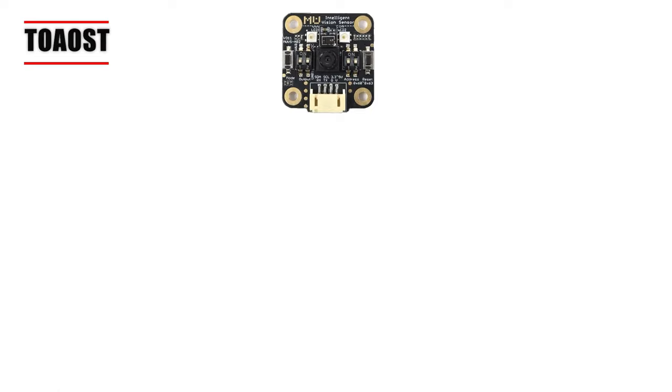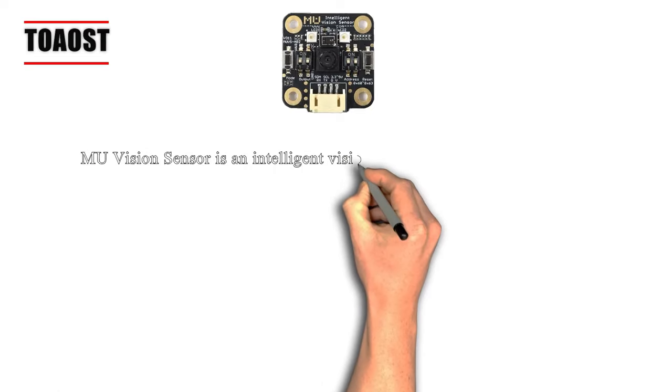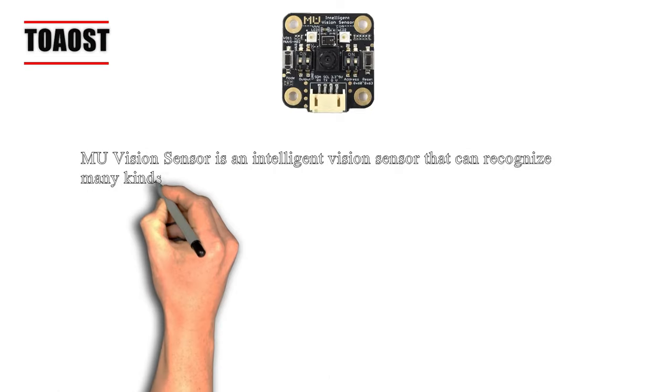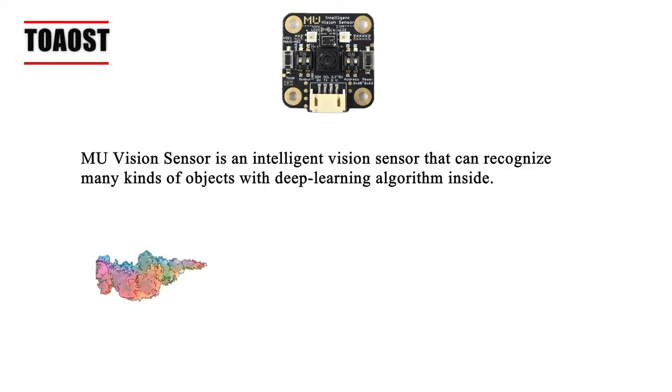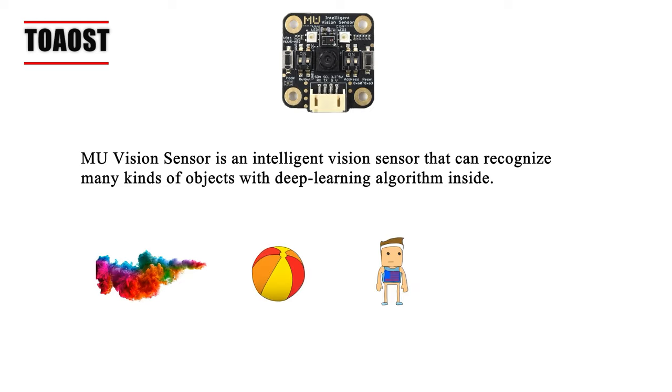So here we have a new vision sensor which can recognize images with a built-in deep learning algorithm. By using this sensor, we can identify or locate objects such as colors, balls, humans, and cards.